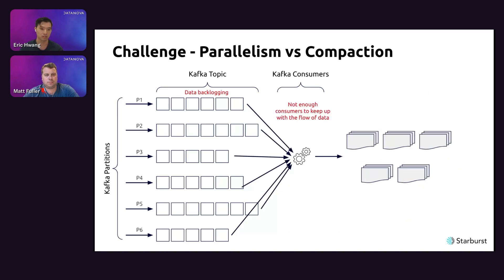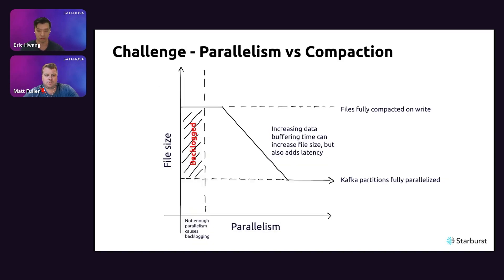On the other extreme, you could assign all partitions to just one consumer — that produces large, efficient files, but then the incoming data may exceed what a single consumer can handle, creating the backlog state. Practically speaking, you don't want either extreme. You want a happy balance: not so many consumers that you get tiny files, but not so few that you cause a backlog.